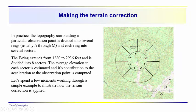So in practice, we would have several rings around a particular observation point. And generally they go from A through M, and each ring is divided up into, the F ring that I've shown here goes from 1,280 feet to 2,936 feet. And it's divided up into eight sectors. The average elevation in each sector is estimated, and its contribution to the acceleration at the observation point is computed.